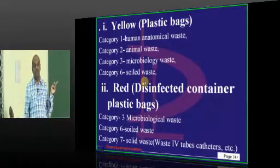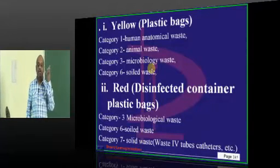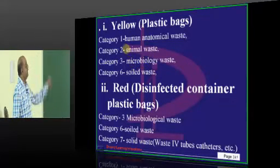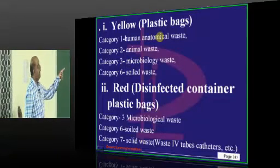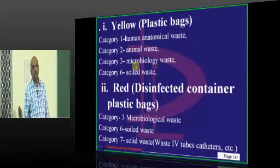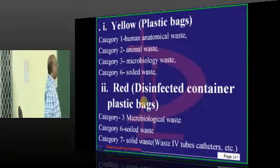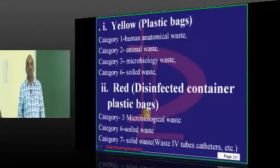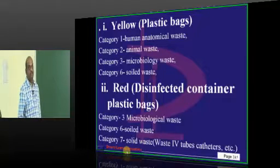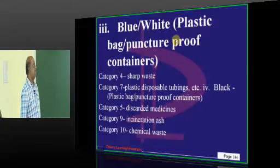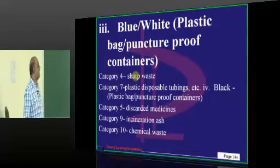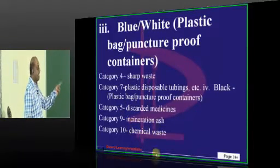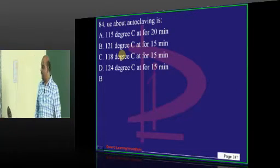You have to fix how to remember these things before the exam. Categories 1, 2, 3 cover anatomy, animals, and microbiology respectively. Category 6 is soiled waste. Red disinfected container plastic bags hold categories 3, 6, and 7. Blue or white puncture-proof plastic containers hold sharp waste, disposable tubings, discarded medicines, and chemical waste for incineration.